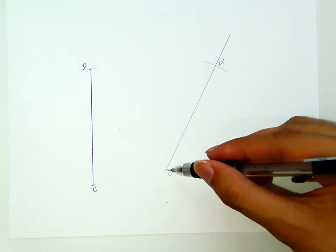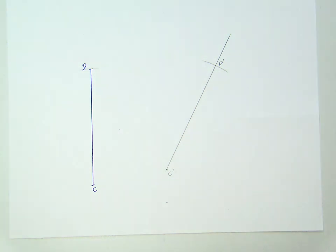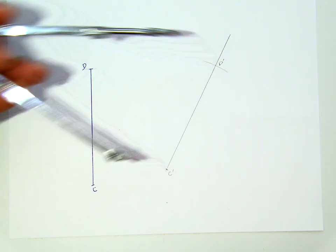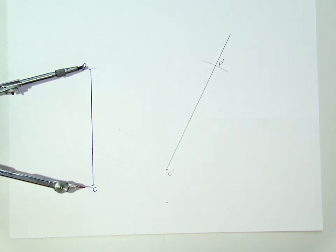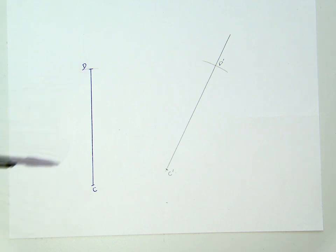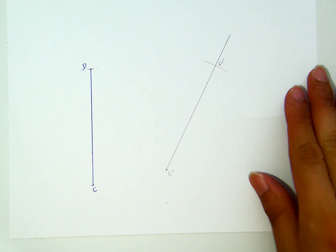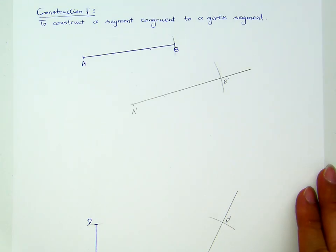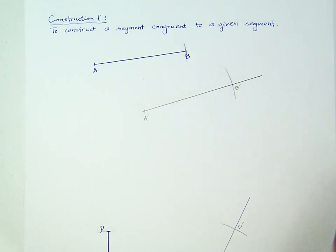So, C' to D' here will have the same length to the original CD, the length of CD, because they have the same compass opening. This is for construction one. It is to construct a segment congruent to a given segment.